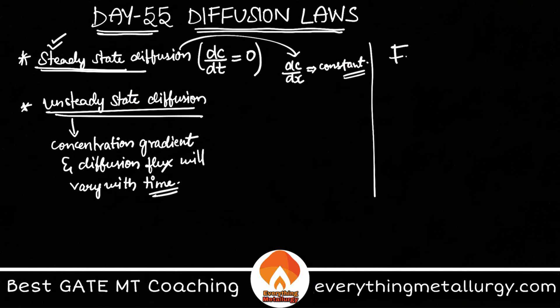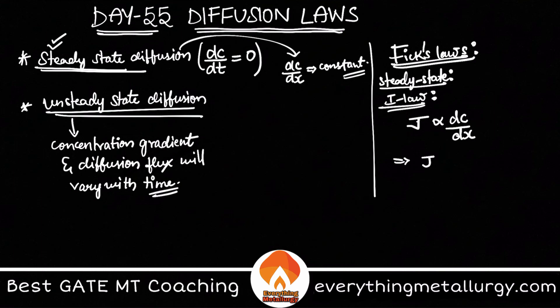We have some important laws governing these different types of diffusion which we call Fick's laws. When we're talking about steady state diffusion, we have Fick's first law to be followed. This explains that the diffusion flux J is proportional to the concentration gradient dC/dx. To remove the proportionality, J equals minus D into dC/dx. This is Fick's first law. Wherever you want to study about steady state, you can use this Fick's first law.